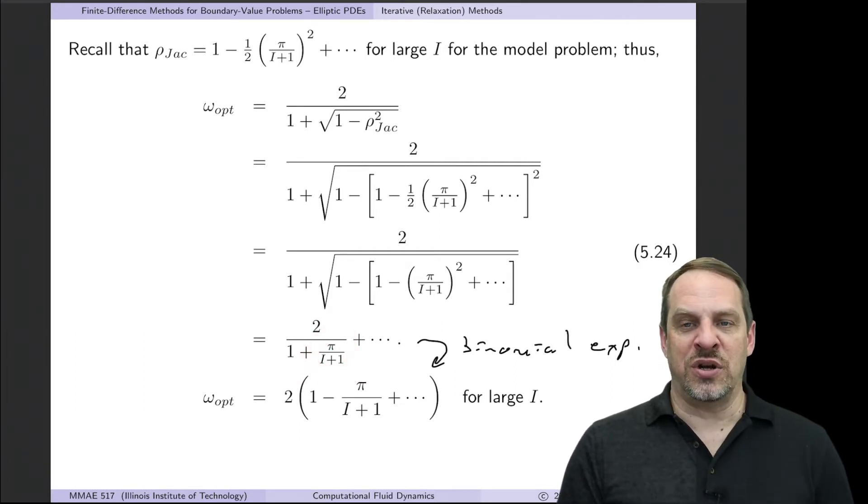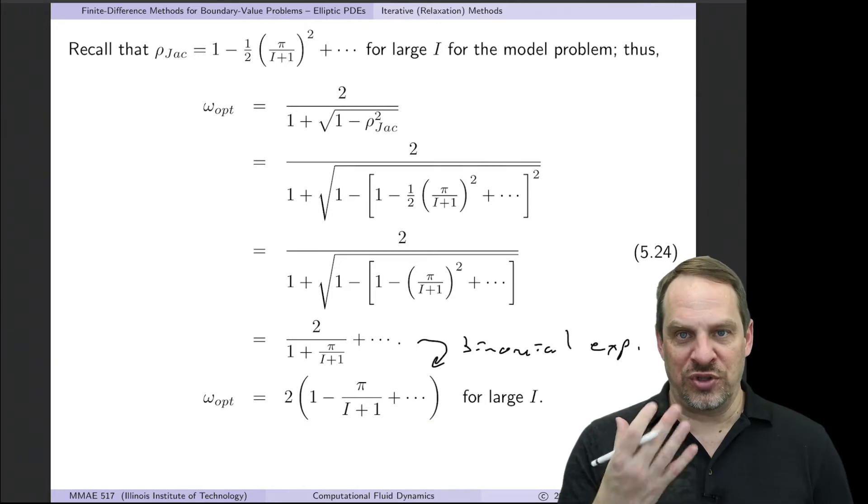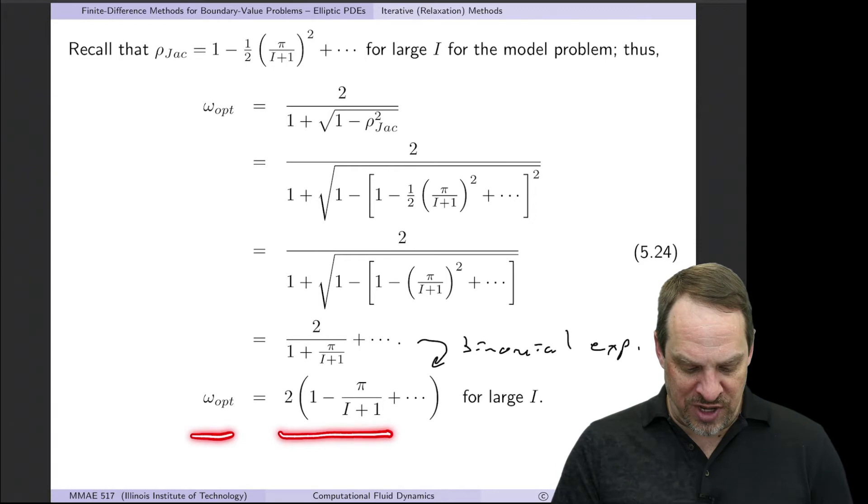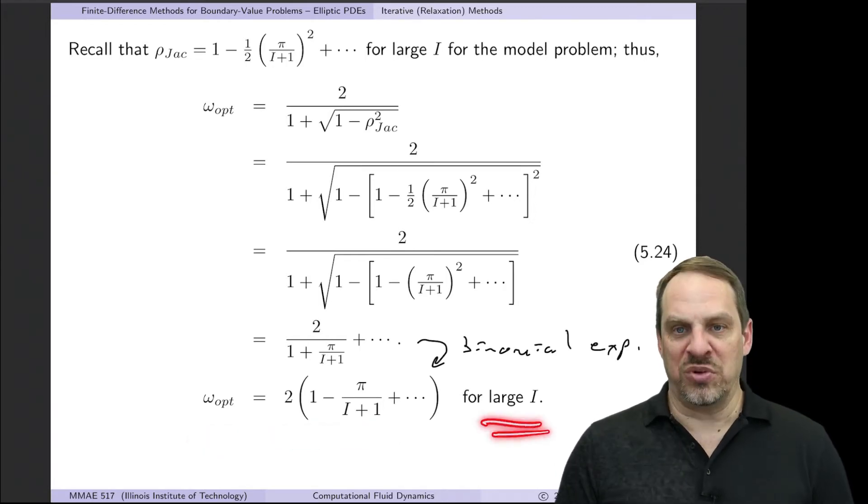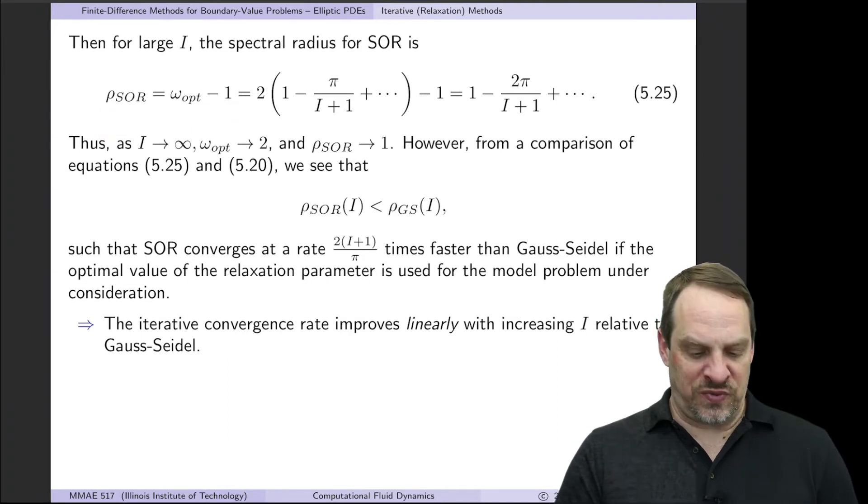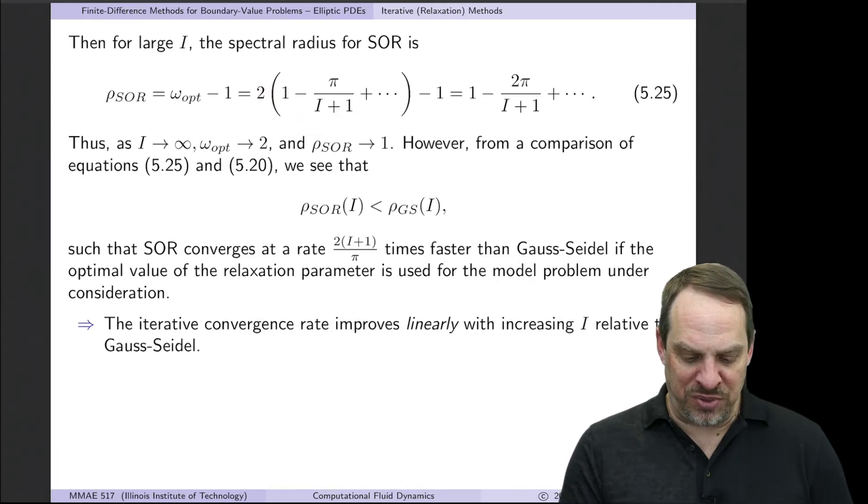So we have 2 over (1 + pi/(I+1)). Now this term, because I is large, is always going to be less than 1. So we can use the binomial expansion to write this 1 over (1 + something smaller than 1) as 1 minus the something. Just look that up. That's the binomial theorem expansion. So now we have an estimate for the optimal value of omega when the number of points is large. Well, from that, we can subtract off 1, and that gives us an estimate for the spectral radius for SOR.